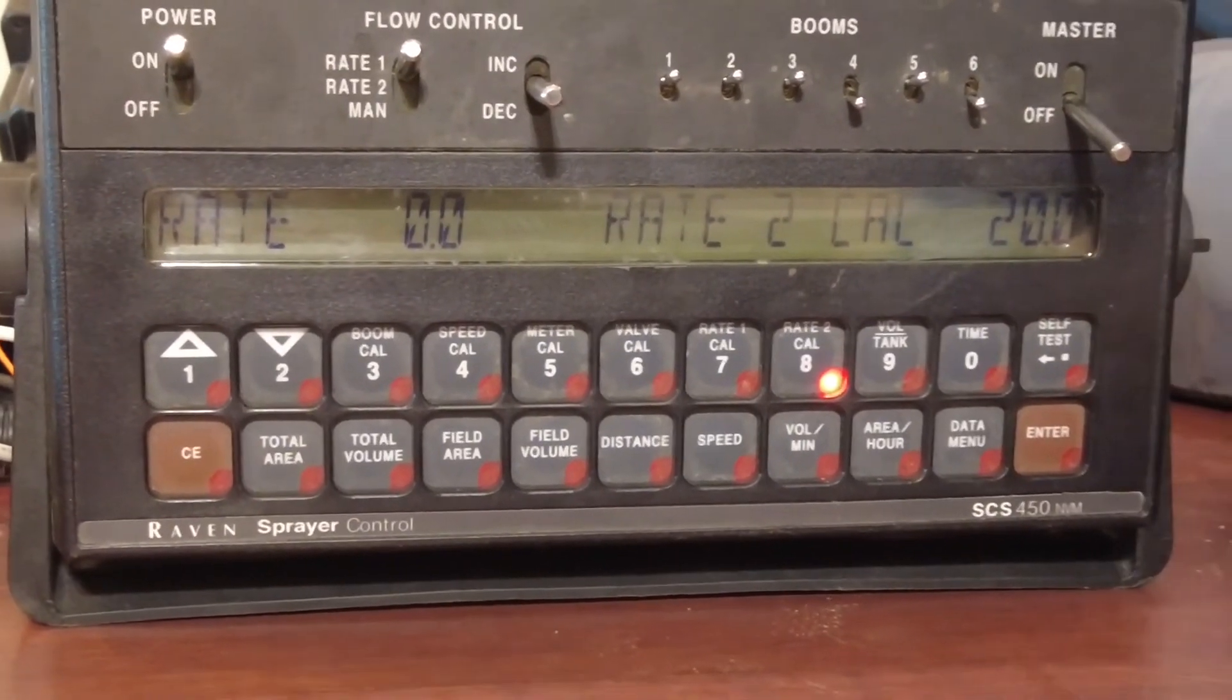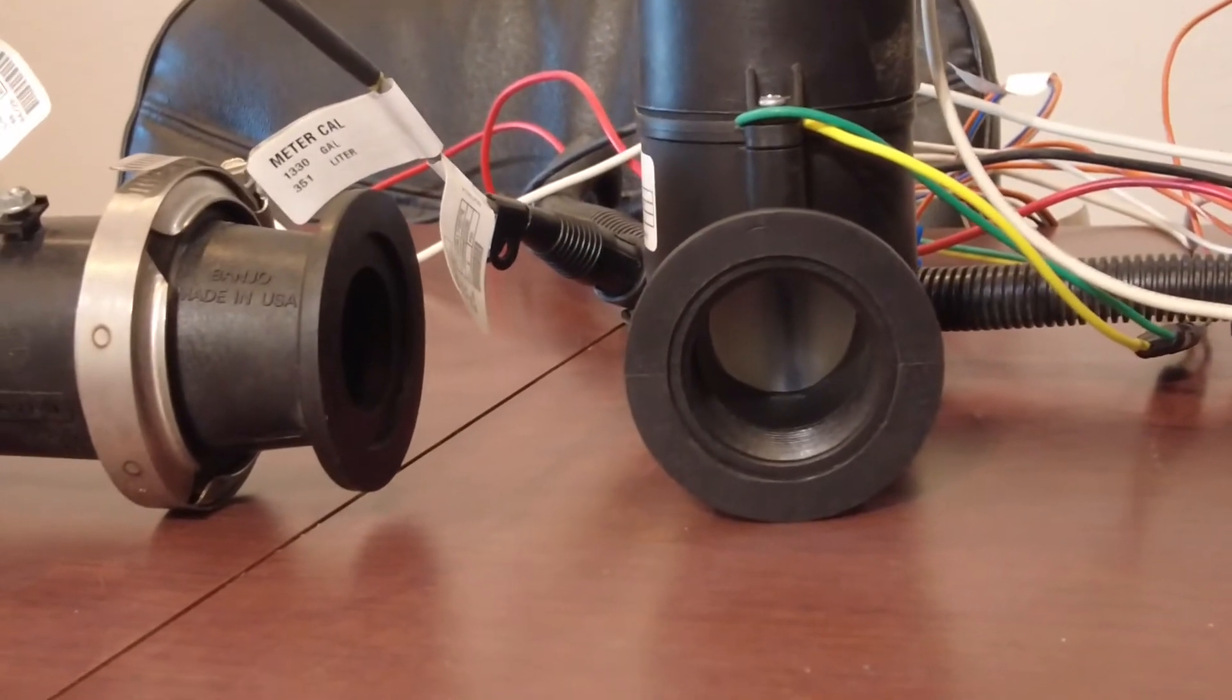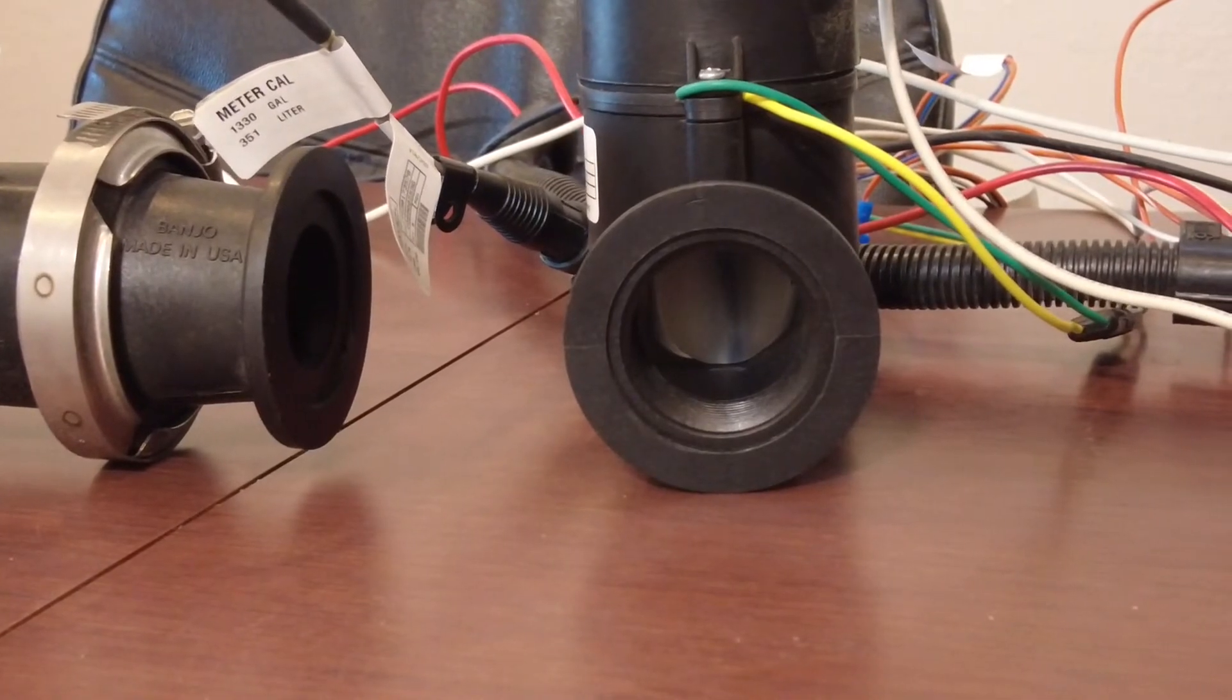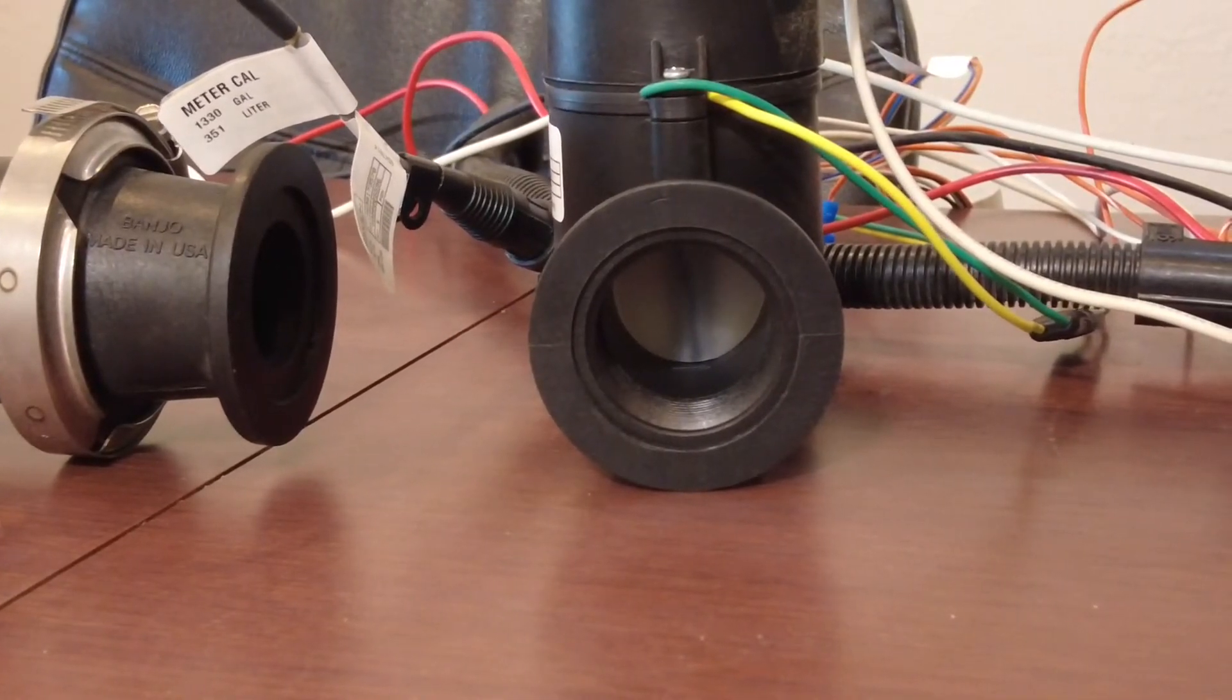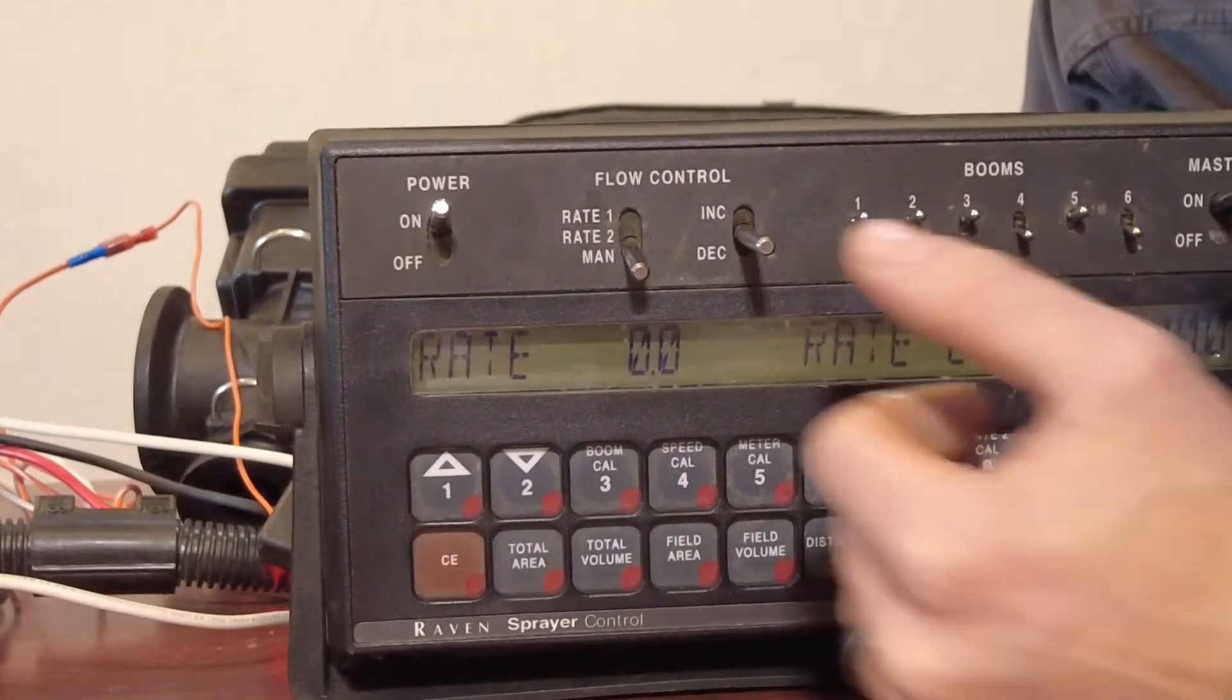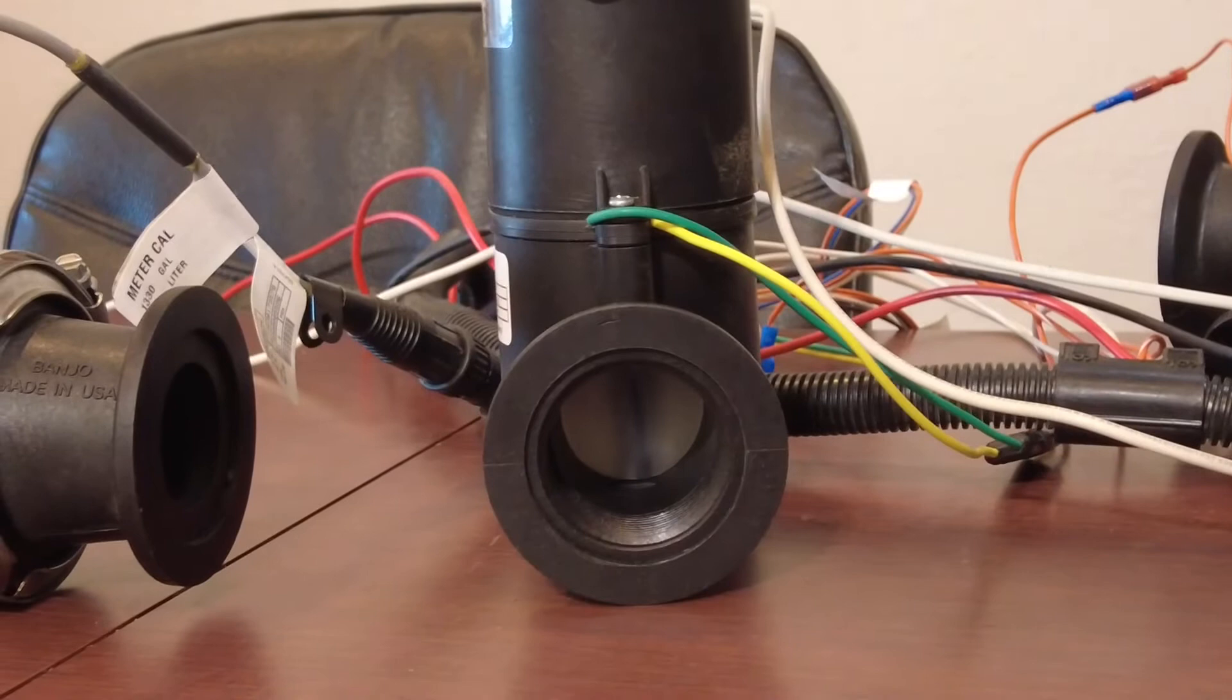So from there, what we can do is we can check our flow meter or our control valve. So what I'm going to do, I'm going to throw this into manual, turn it on, increase, decrease. Can you see it moving? So what we're doing, I'll show you right here how to test this. Come back here to the screen, Cody. You turn your rate down to manual, turn your master on and hit the increase and decrease buttons to get that butterfly to move.